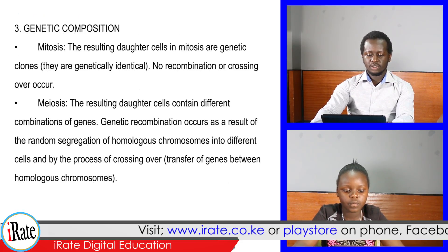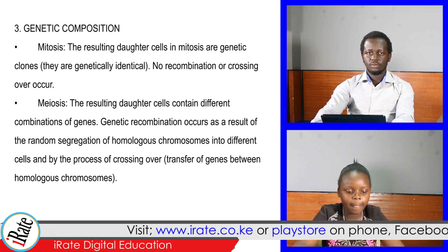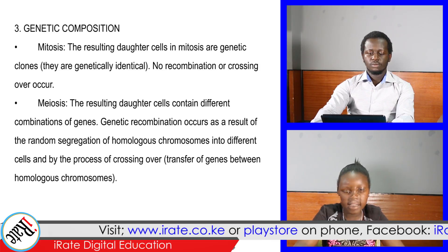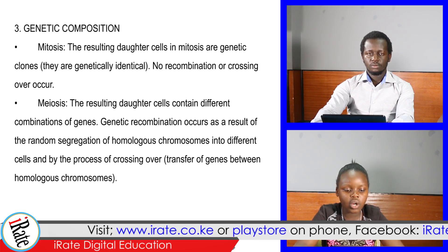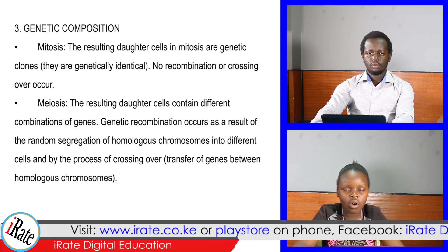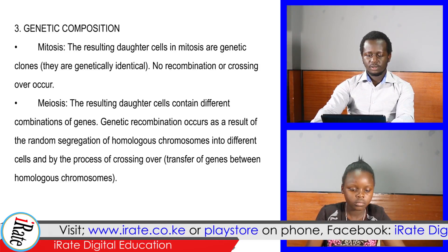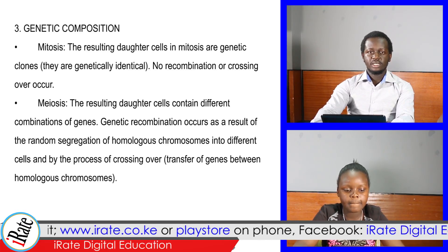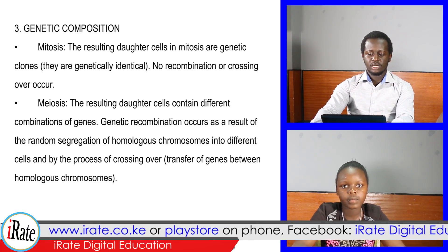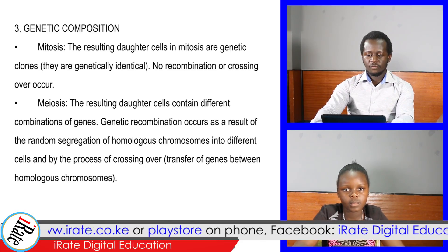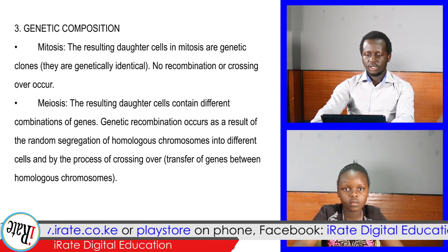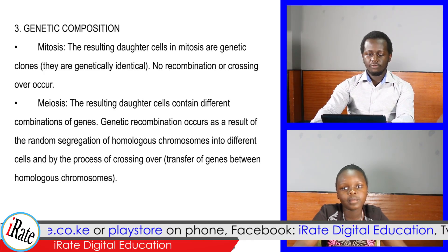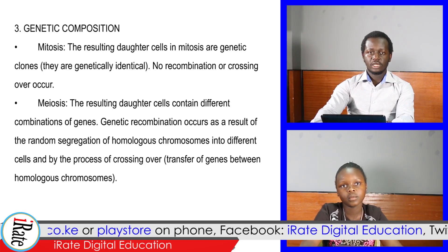Point 3: Genetic composition. In mitosis, the resulting daughter cells are genetic clones — that is, they are genetically identical; no recombination or crossing over occurs. In meiosis, the resulting daughter cells contain different combinations of genes. Genetic recombination occurs as a result of the random segregation of homologous chromosomes into different cells and by the process of crossing over — that is, transfer of genes between homologous chromosomes.